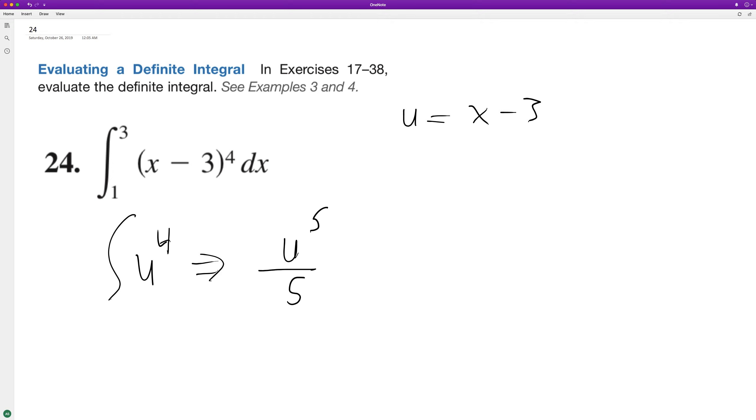And then we just sub back in. So we end up with (x minus 3) to the 5th over 5, and we're taking this from 1 to 3.